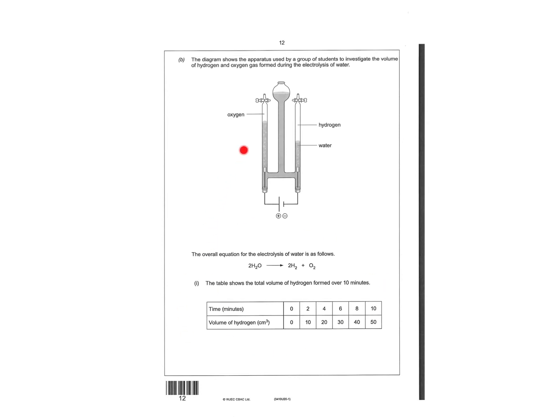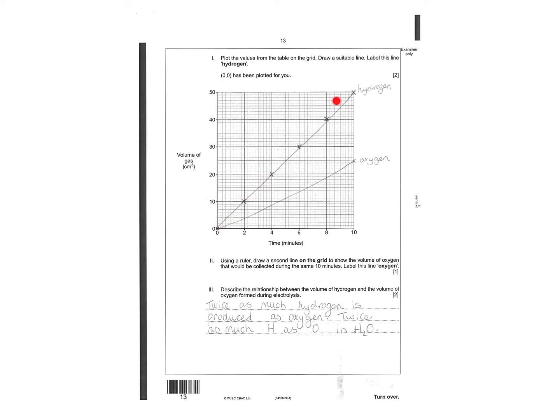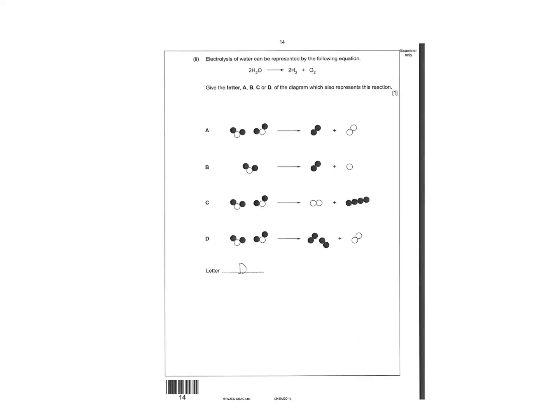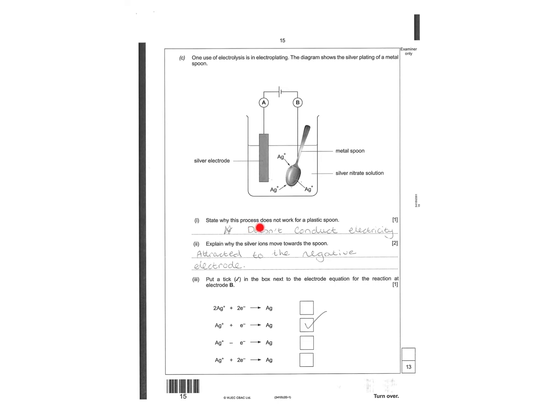Nice information then showing the electrolysis of water and then you had to plot the points for hydrogen and label it hydrogen. Then it said to do the same for oxygen. If hydrogen's 50, oxygen is going to tap out 25 because it's half the amount made - twice as much hydrogen is produced in oxygen because there's twice as much hydrogen than oxygen in H2O. Pick the letter which represents the reaction and it's going to be D. There's water forming two hydrogens for one oxygen.